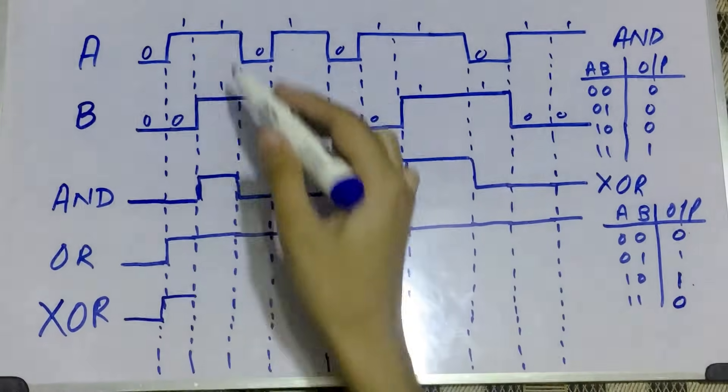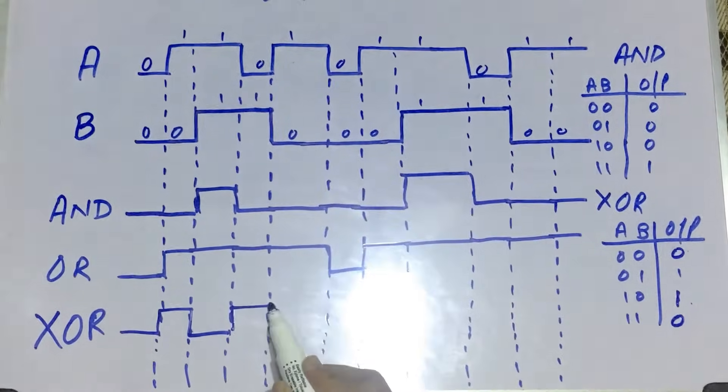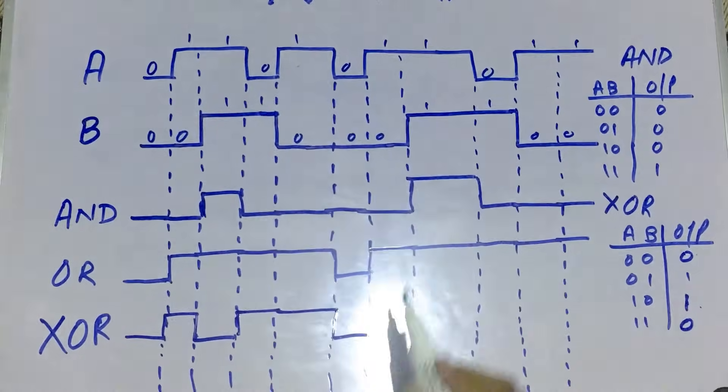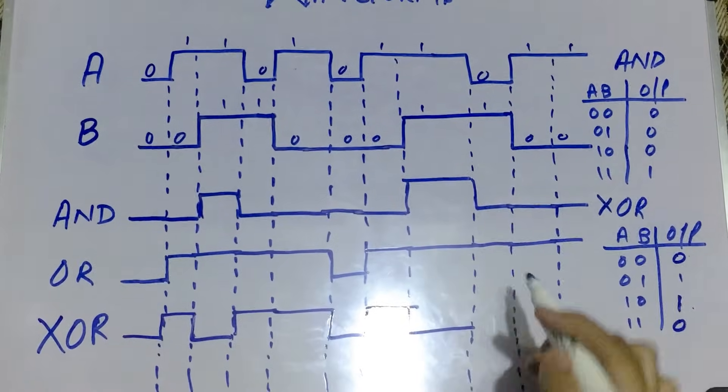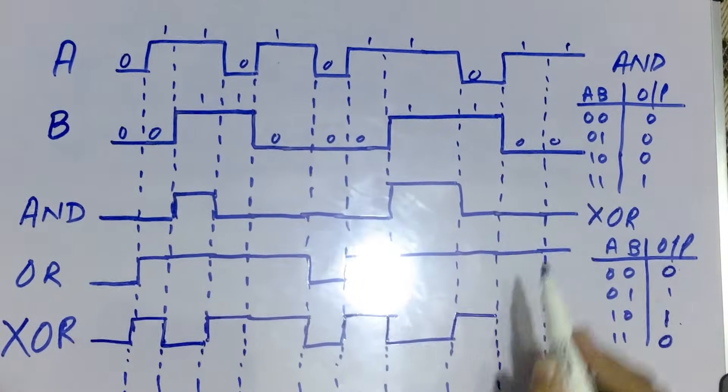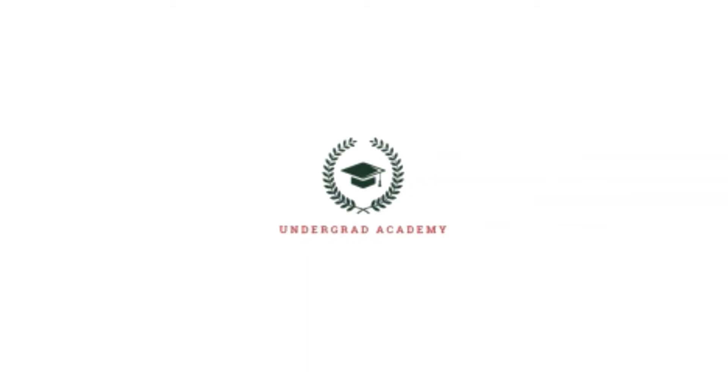Then 1 and 0 is 1, 1 and 1 is 0, 1 and 0 is 1, 0 and 1 is 1, 1 and 0 is 1, 1 and 1 is 0, 0 and 1 is 1, and 1 and 0 is 1. That's all for today.